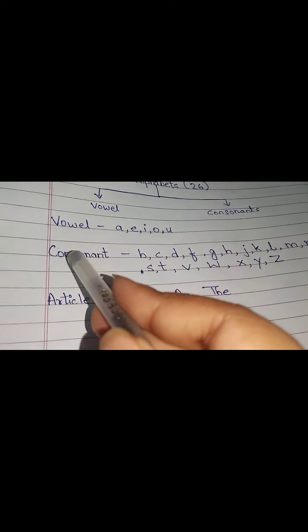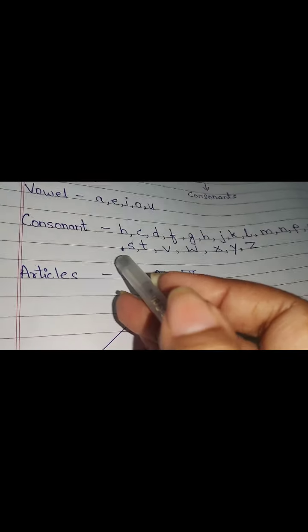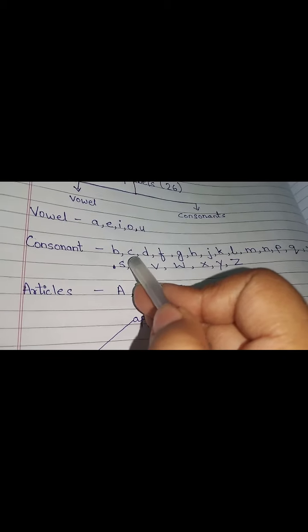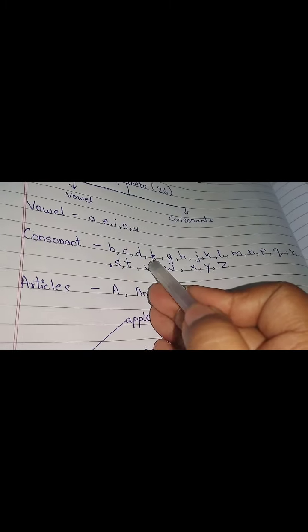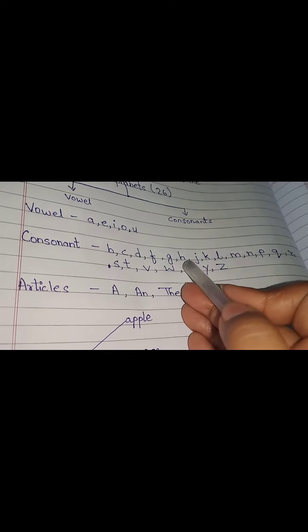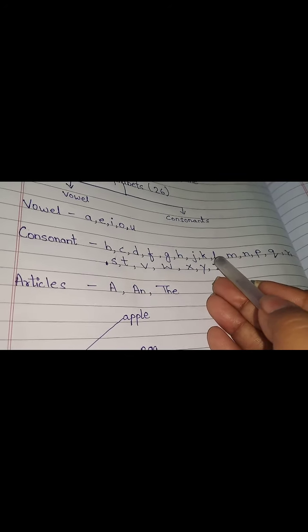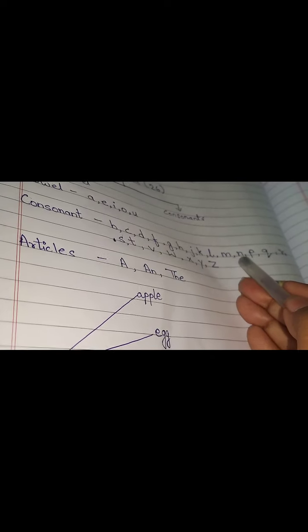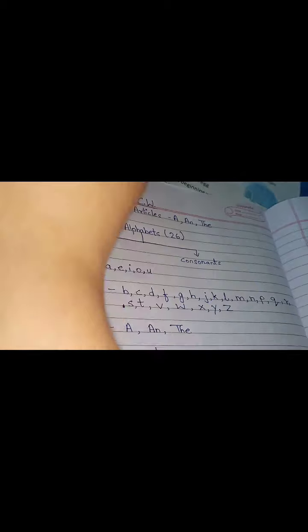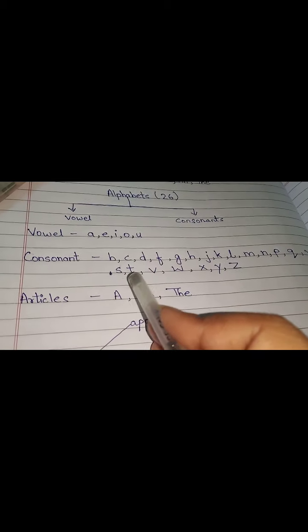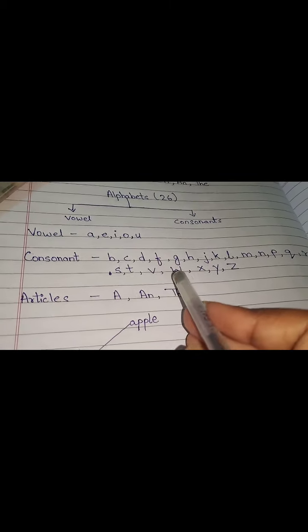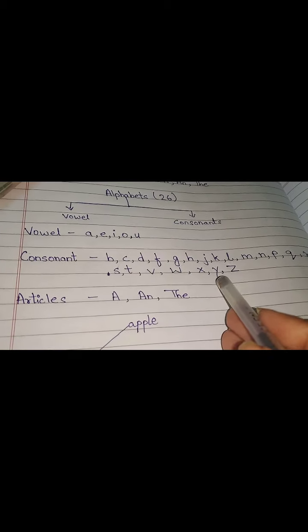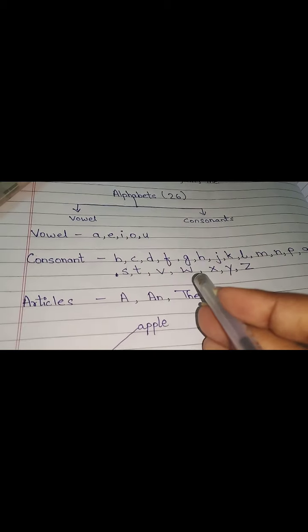The remaining alphabets are the consonants. B, C, D, F, G, H, J, K, L, M, N, P, Q, R, S, T, V, W, X, Y, Z — these are the consonants.